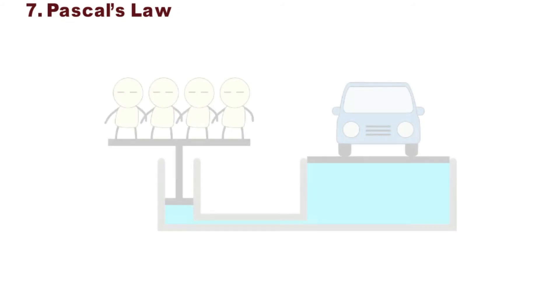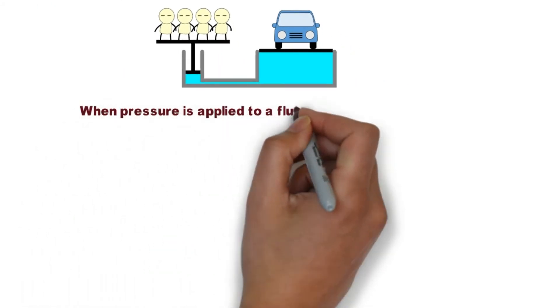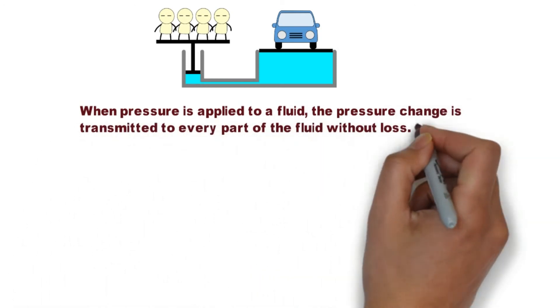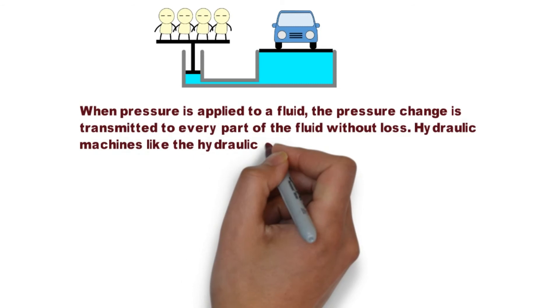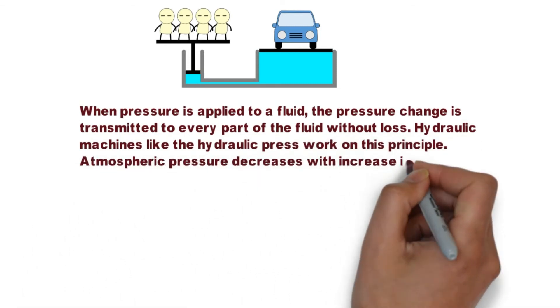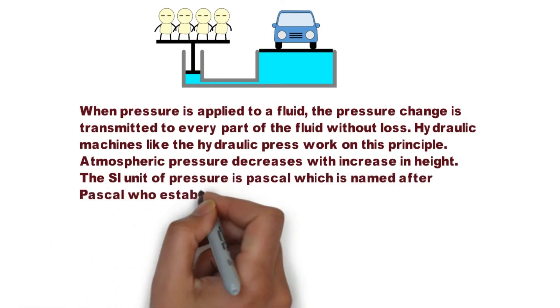Pascal's Law. When pressure is applied to a fluid, the pressure change is transmitted to every part of the fluid without loss. Hydraulic machines like the hydraulic press work on this principle. Atmospheric pressure decreases with increase in height. The SI unit of pressure is Pascal, which is named after Pascal who established this law.